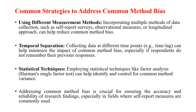Here are common strategies to address common method bias, summarized into three points. Number one: using different measurement methods — incorporating multiple methods of data collection such as self-report surveys, observational measures, or a longitudinal approach can help reduce common method bias. Number two: temporal separation — collecting data at different time points, for example using a time-lag design, can help minimize the impact of common method bias, especially if respondents do not remember their previous responses.